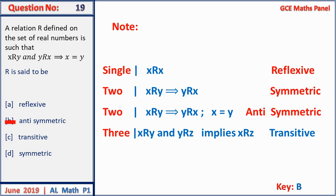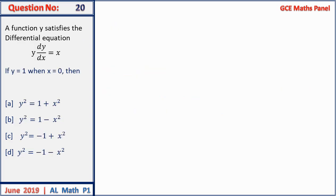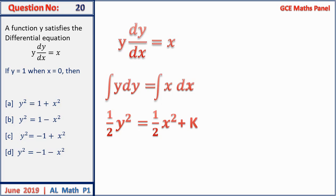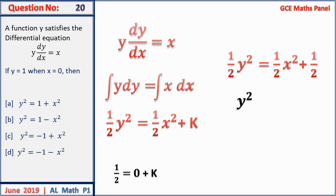Question 20: a function y satisfies the differential equation x·dy/dx = x. Separating variables: y dy = x dx. Integrating both sides: (1/2)y² = (1/2)x² + k. With y = 1 when x = 0, k = 1/2. Replacing k gives y² = x² + 1. The answer is A.